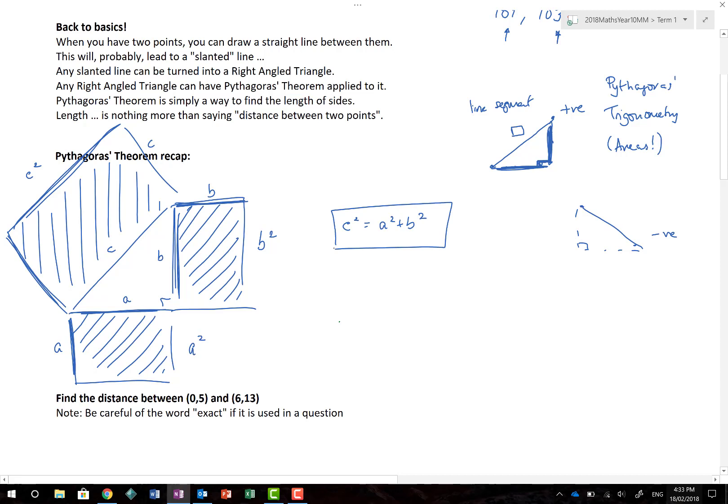Yep, now that deals with areas. So the area of the two not longest sides is equal to the sum of the area of the longest side. Now, as a point, this one here, C, is called the hypotenuse, and is always the longest side.